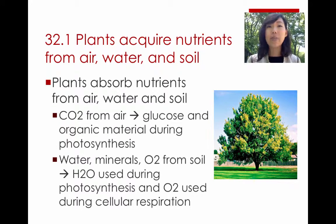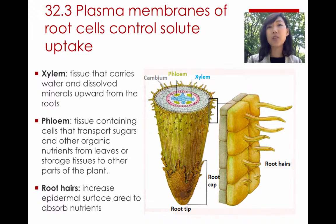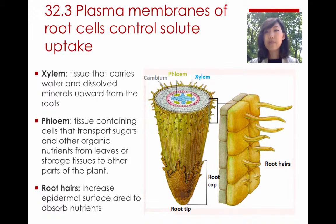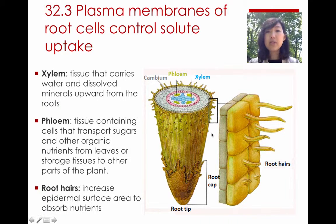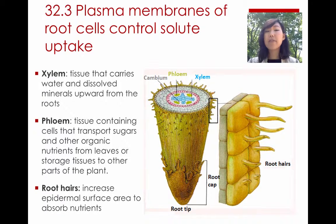Plants are definitely dependent on their environment. There are different kinds of tissues that the plant uses to transport materials from the roots up to the leaves. One of them is called xylem — xylem transports water and minerals up from the roots to the tops of the leaves. Phloem transports the sugars, food, and nutrients from the leaves to the other parts of the plant.